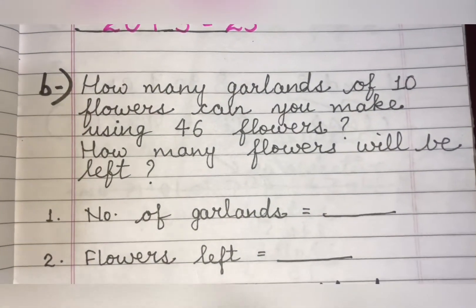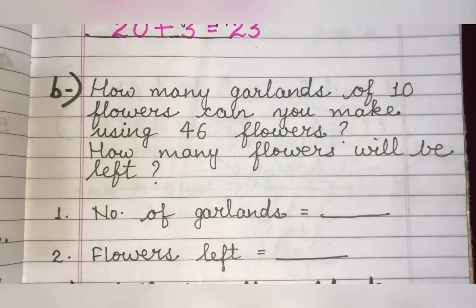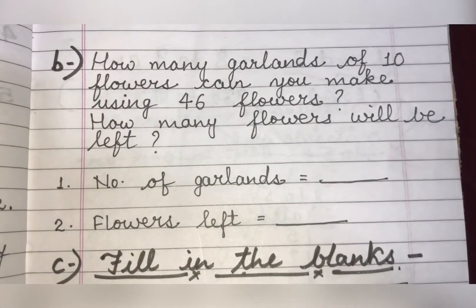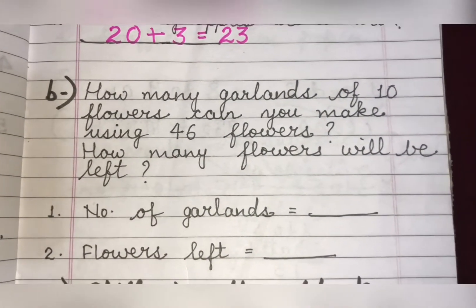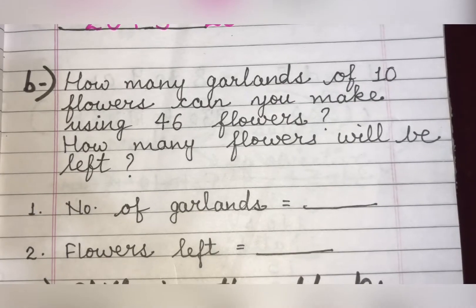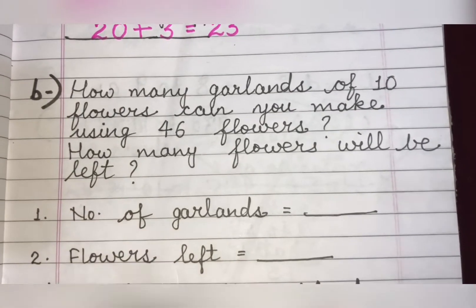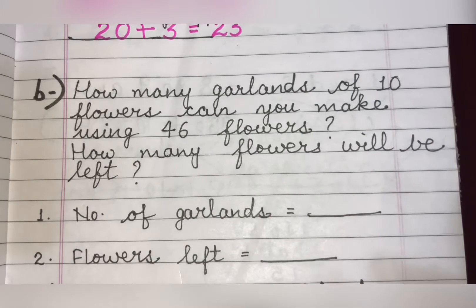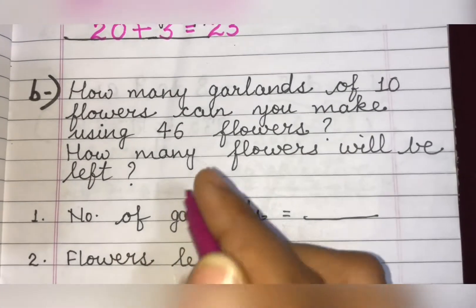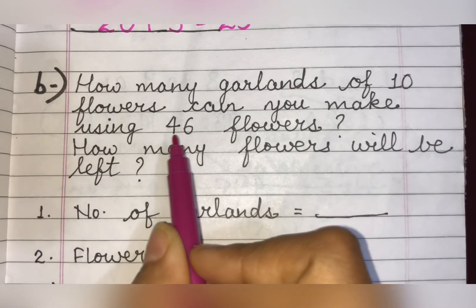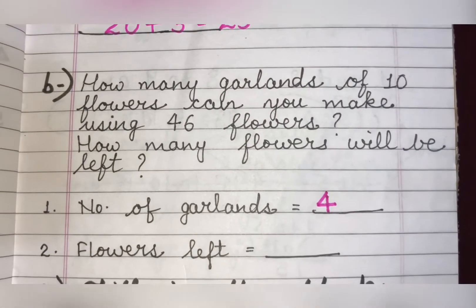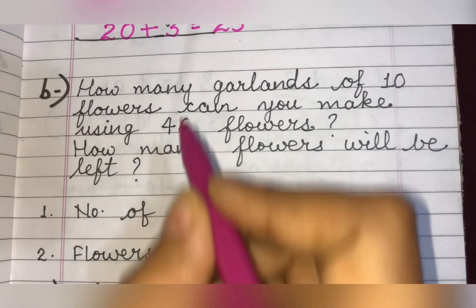Now the next question is: how many garlands of 10 flowers can you make using 46 flowers, and how many flowers will be left? A garland means a wreath. If you have 46 flowers and you make groups of 10, there are 4 tens in 46, so you can make 4 garlands of 10 flowers each. The remaining flowers will be 6.